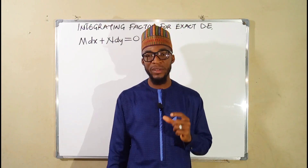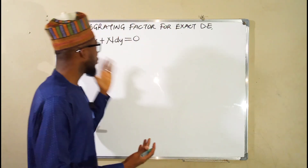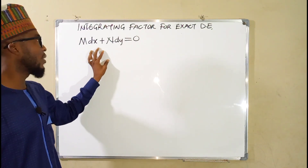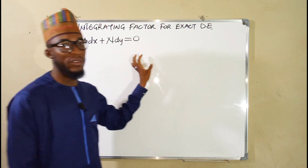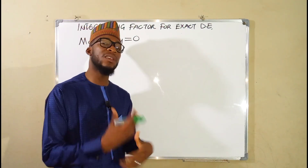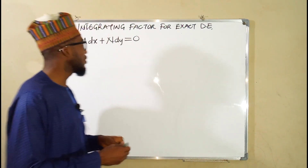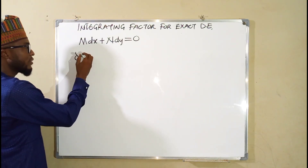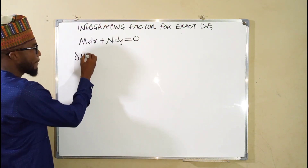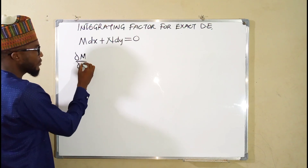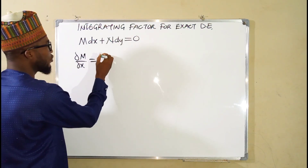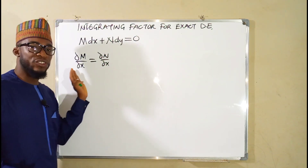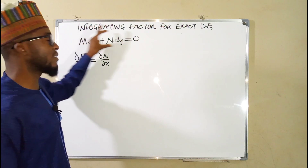Remember, in our previous lesson we learnt that the general form of an exact differential equation is given by M dx plus N dy equals 0. But we have to test whether it is really exact or not by setting the partial derivative of M with respect to y equal to the partial derivative of N with respect to x. If this condition holds, we say this is really exact.